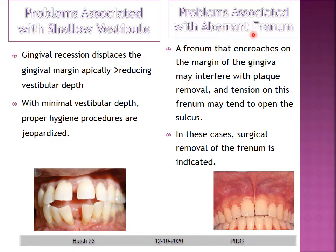Problems associated with an aberrant frenulum: a frenulum that encroaches on the margin of the gingiva may interfere with plaque removal, and tension on this frenum may tend to open the sulcus on either side. In these cases, surgical removal of the frenum is indicated.